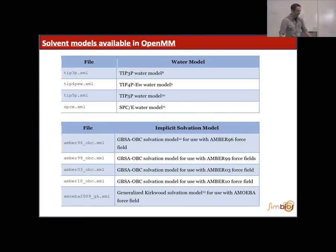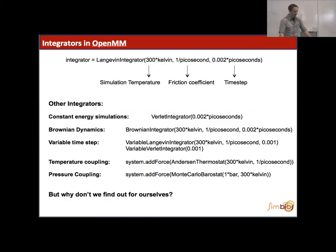So the solvent models that are available in OpenMM, we can see right here, we have all of these explicit water models up here, TIP3P, TIP4P-EW, TIP5P if you want, SPC, and then a number of implicit solvent models, as we can see on this slide right here. You can find all of this in the manual. And you can also choose the different types of integrators. We heard about this before from Peter, where you basically specify the temperature, friction coefficient, and the time step. But you don't have to do the Langevin integrator. All of these here are possible as well.